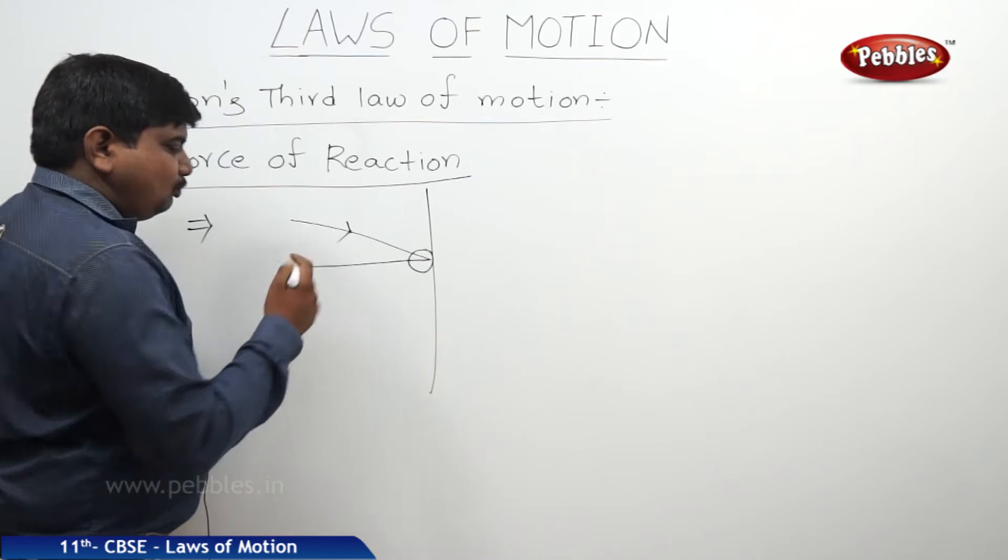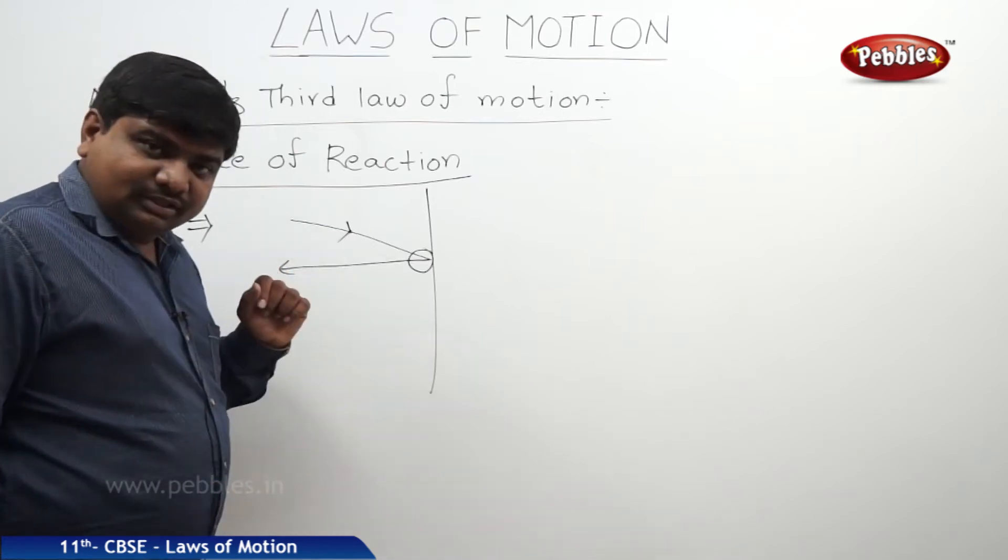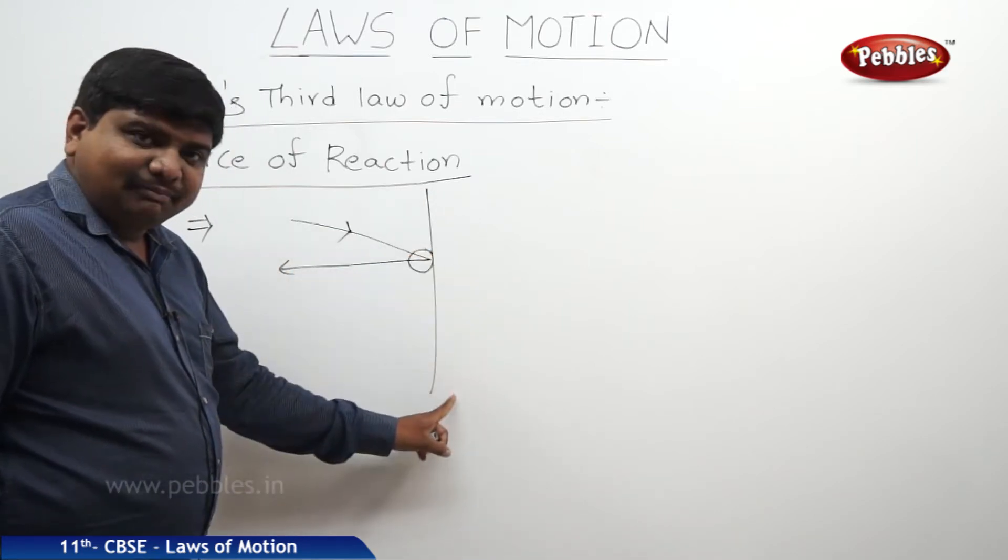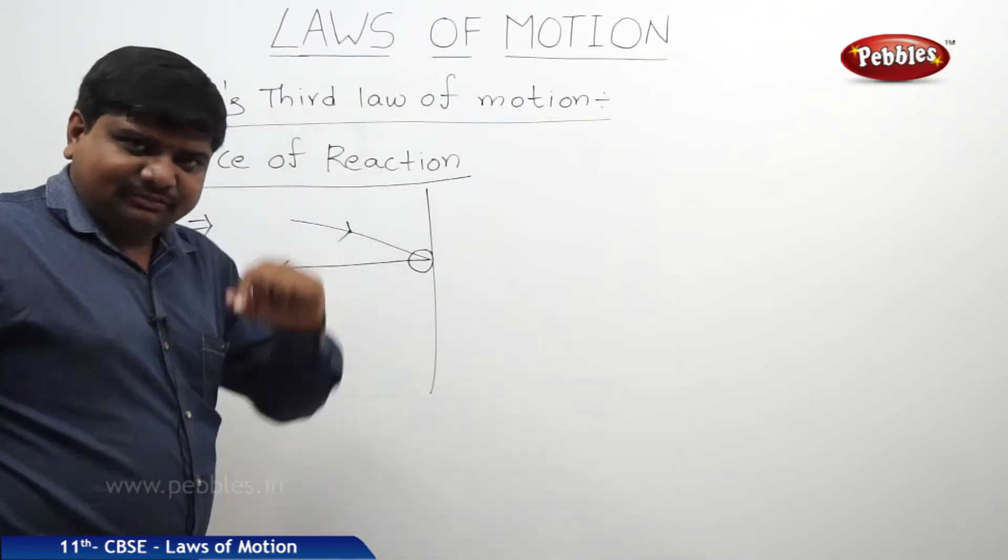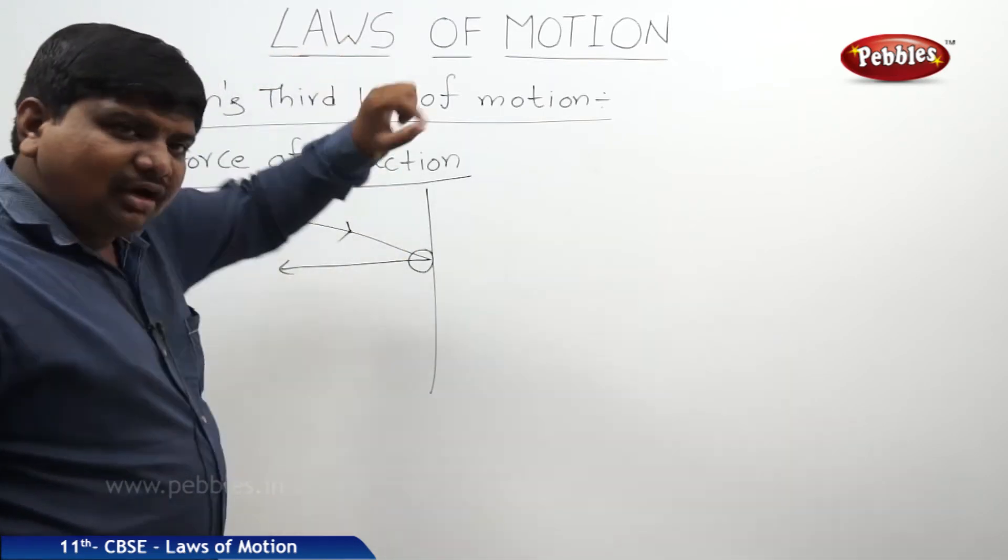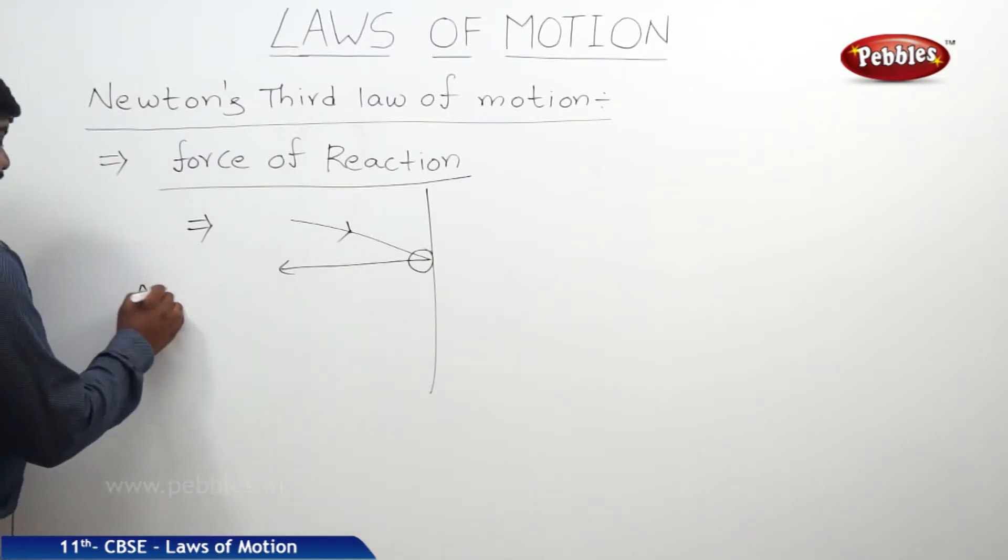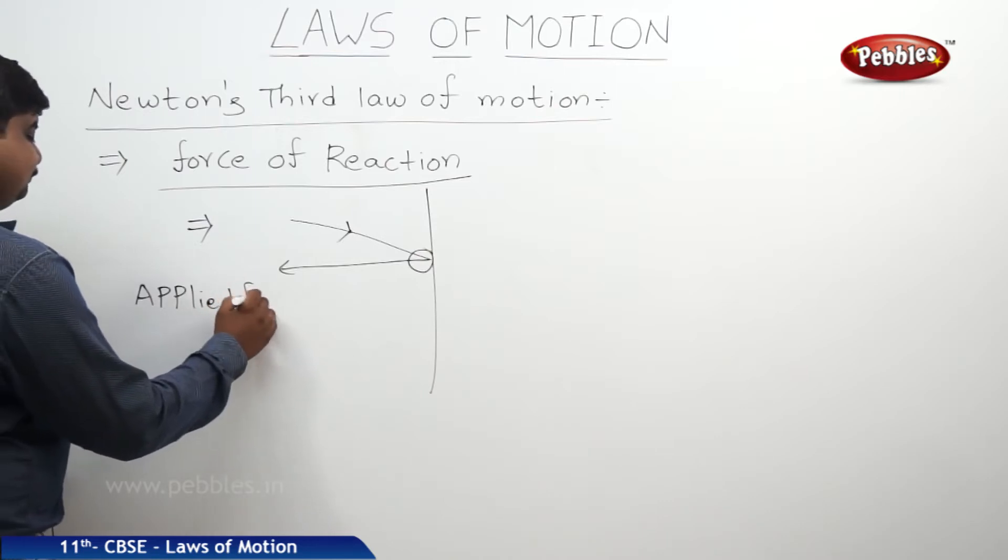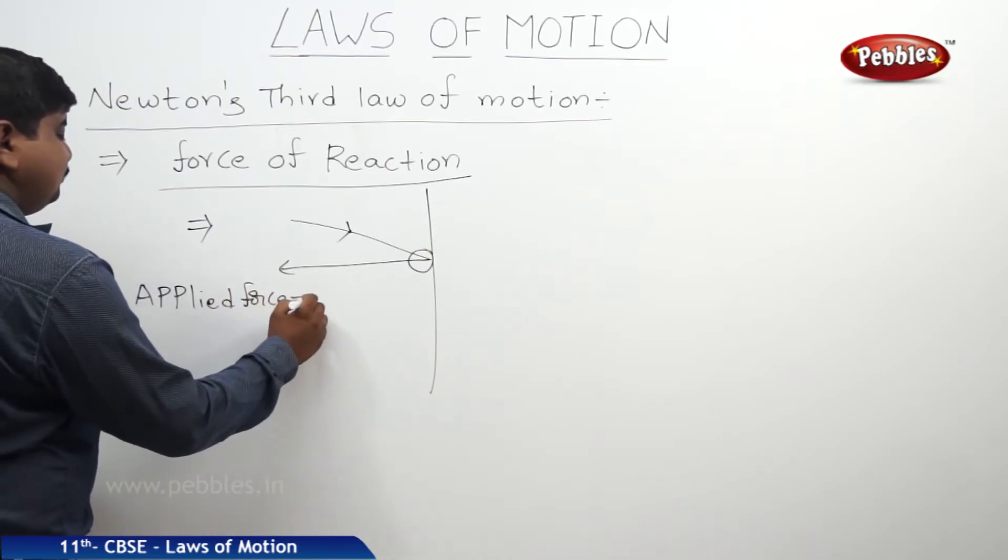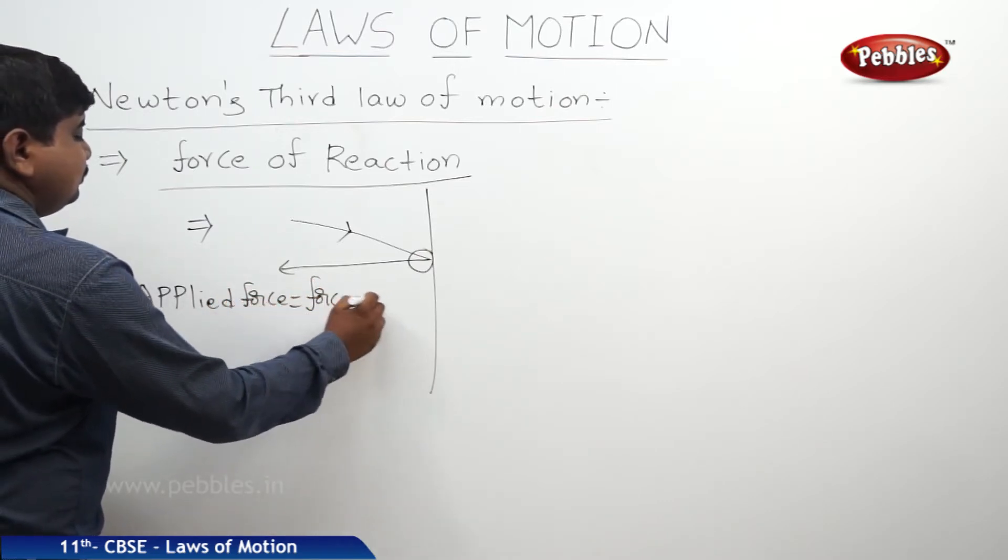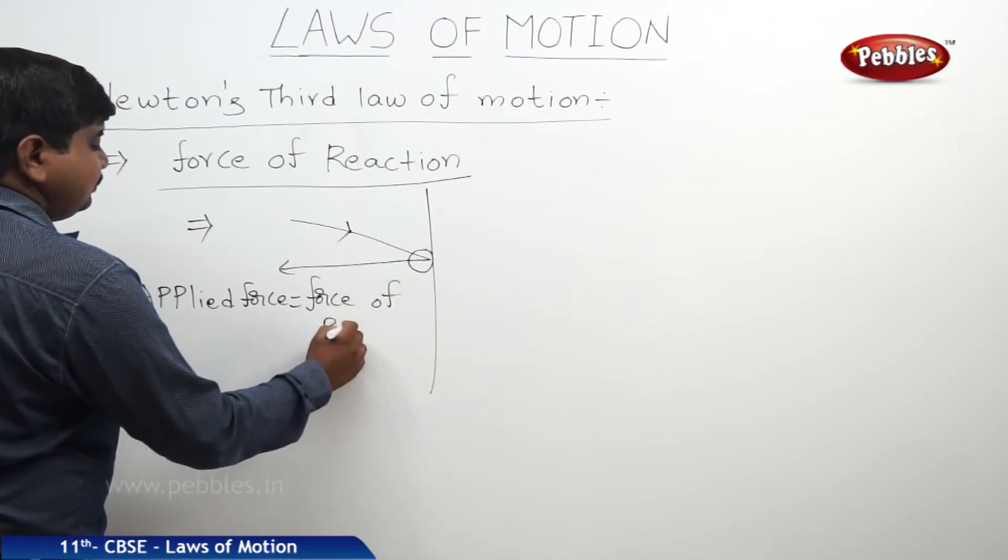So the force what we applied is applied force. The force what was impacted by the wall is force of reaction. According to the Newton's third law of motion, applied force and force of reaction are same in magnitude but opposite in direction. Applied force is equal to force of reaction.